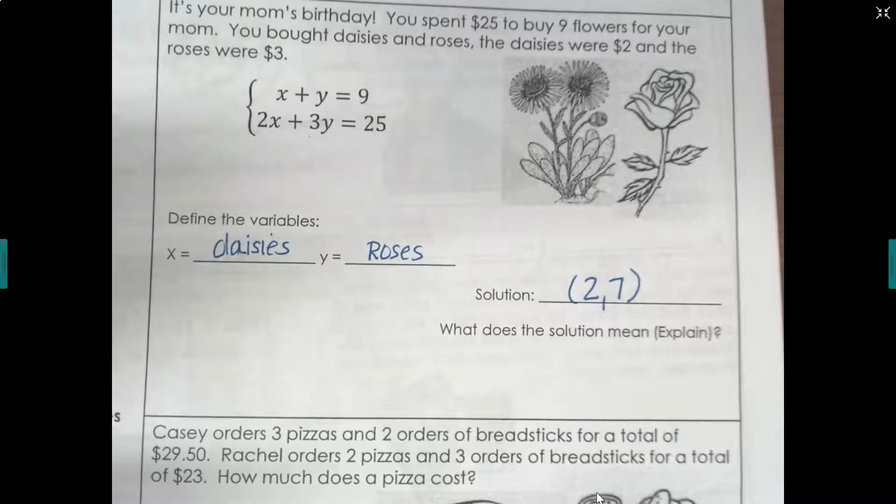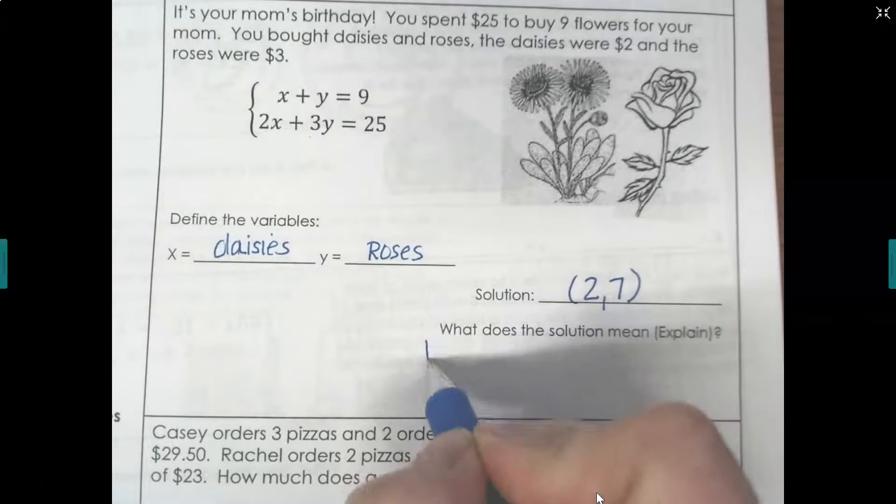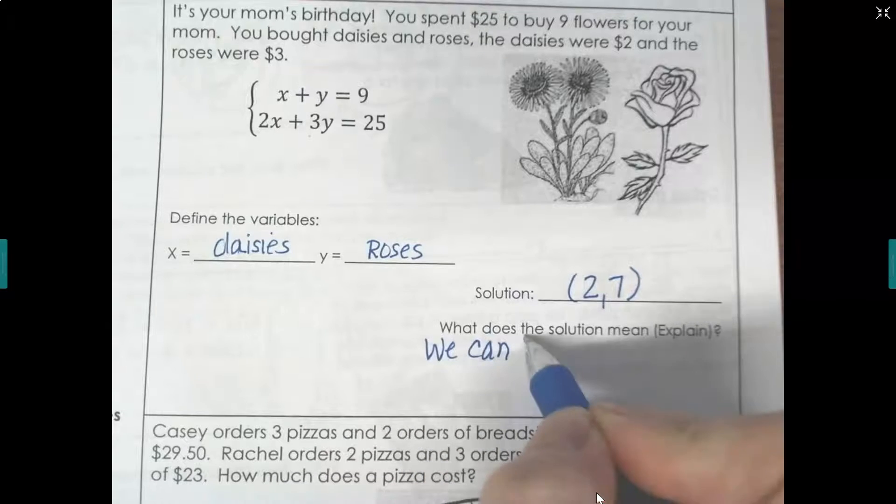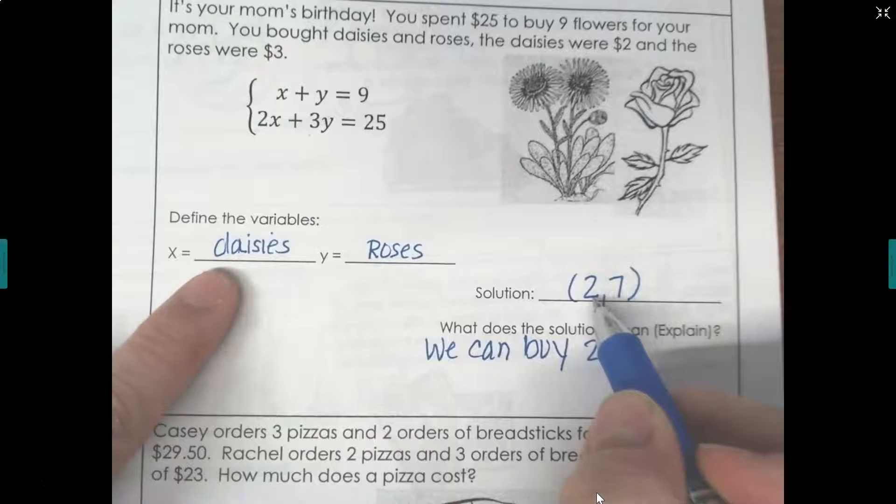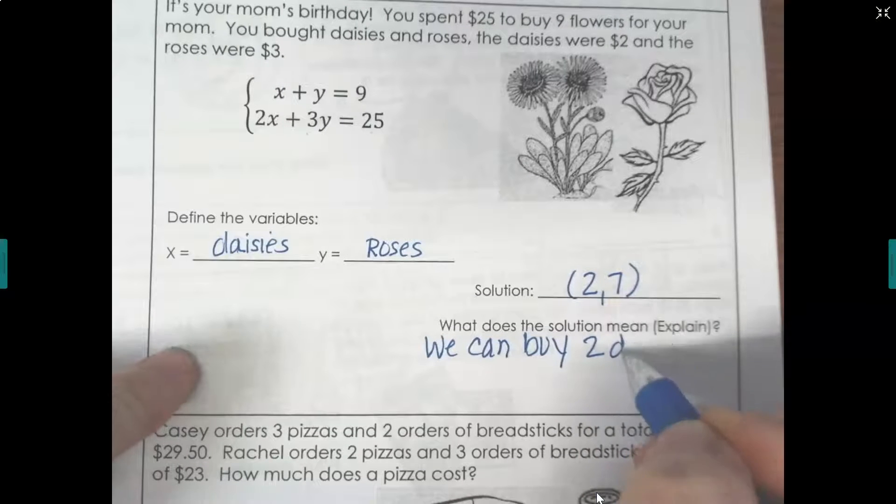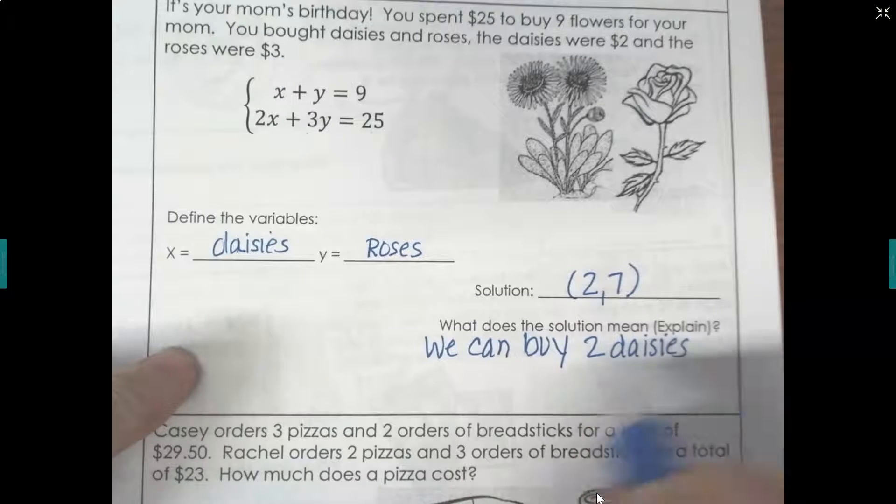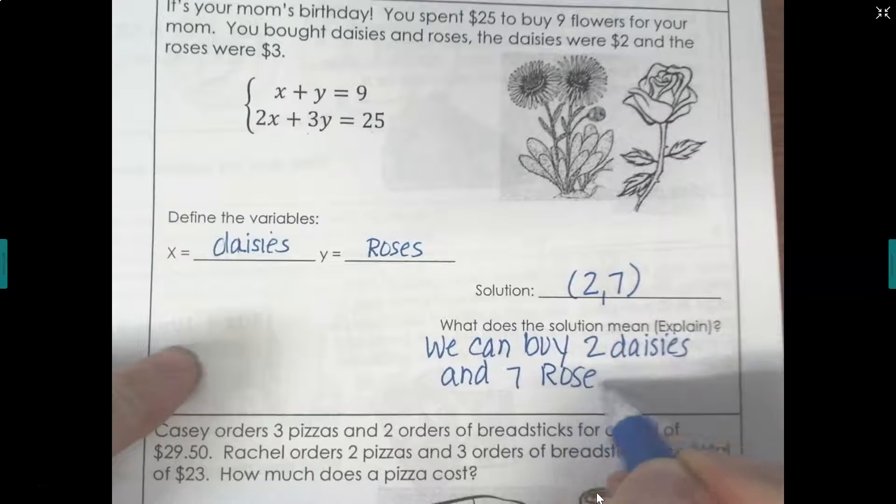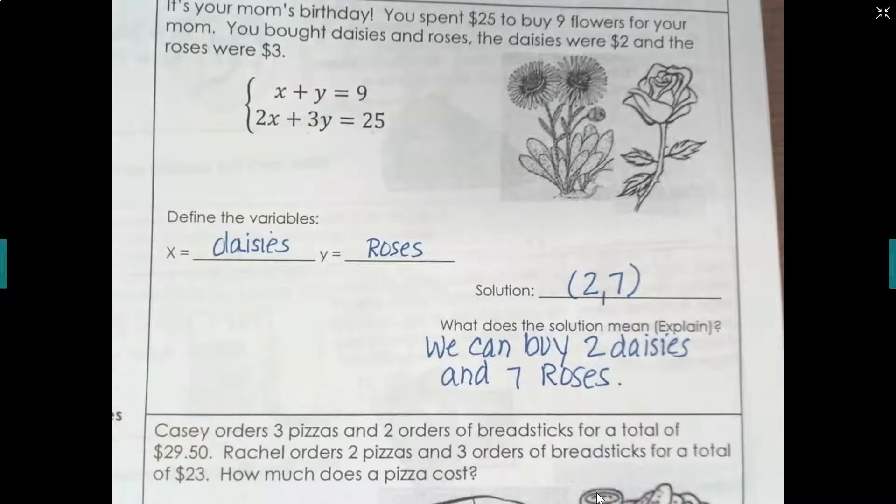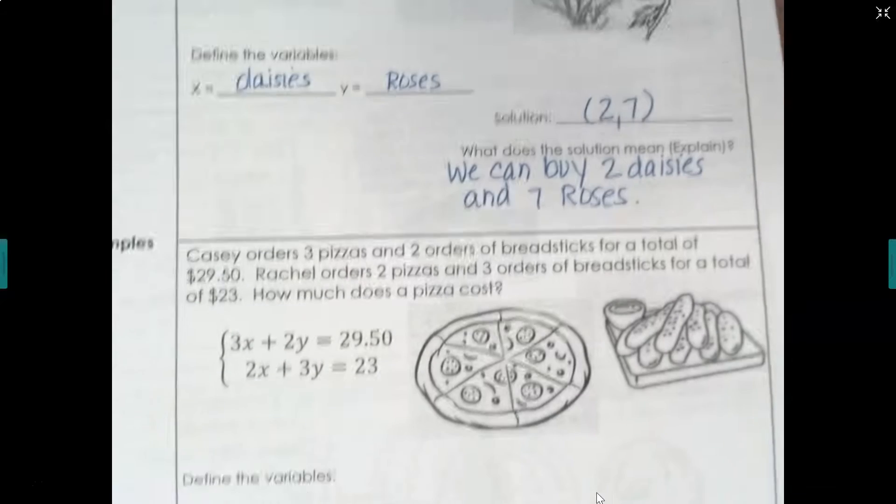But what I want to know is what does that mean in the case of this problem? This means that we can buy two, well the x value was daisies. So we can buy two daisies and seven roses. So you want to be able to explain what does your solution mean for this particular problem. All right, so let's try it again so we can kind of see, make sure we're on the right track and then you can do the practice.